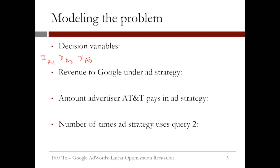Now, of course, we have three different advertisers. So we will have variables XT1, XT2, and XT3. These variables represent the number of times that we display T-Mobile's ad for queries 1, 2, and 3, respectively. And our last advertiser is Verizon. So we will have variables XV1, XV2, and XV3, which are the numbers of times that we display Verizon's ad for queries 1, 2, and 3, respectively.